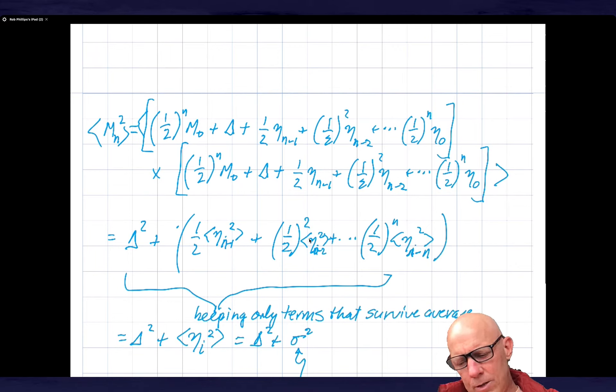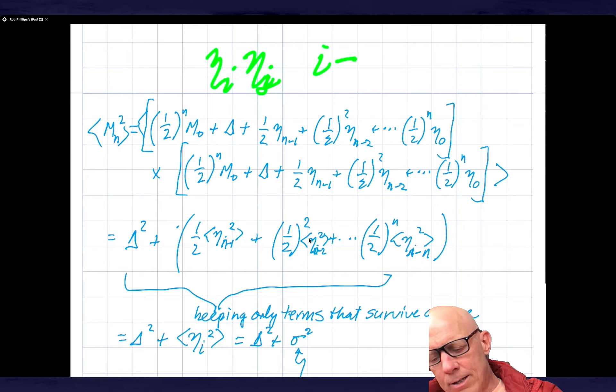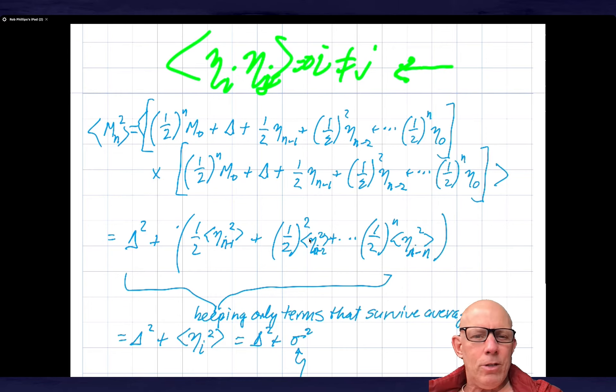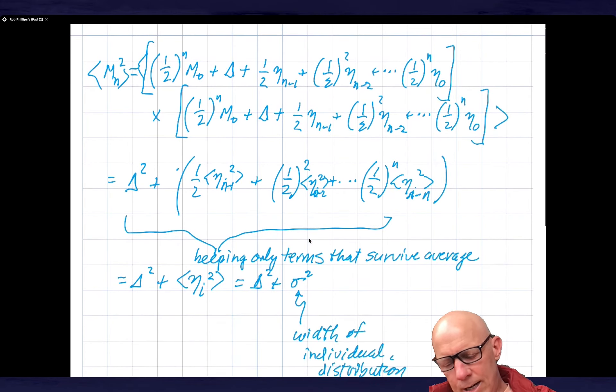Now, what about the variance? Just like we did in the previous case, I need to multiply this thing by itself and I'm going to pick up all sorts of terms. But like we saw in the case of the timer, anytime that I have eta i times eta j where i does not equal j, when I average that, that equals zero. The etas in different rounds of division are not correlated with each other, so the second order correlation vanishes.